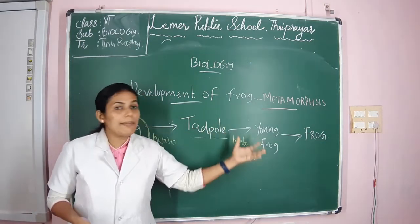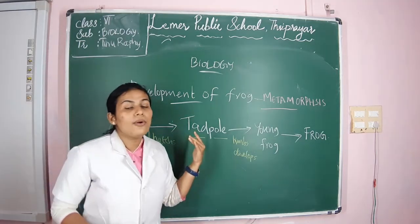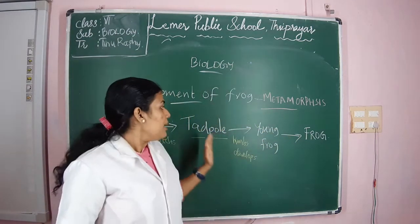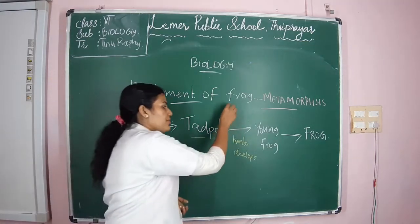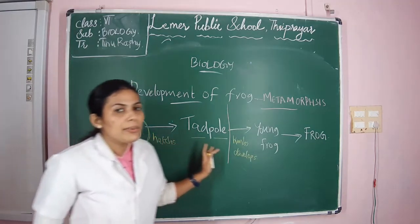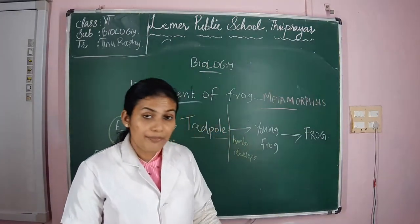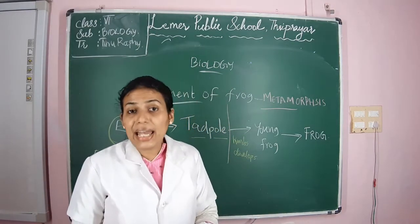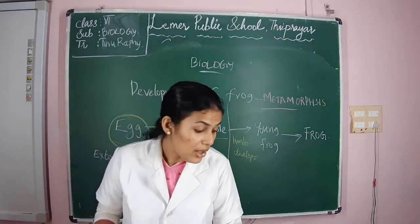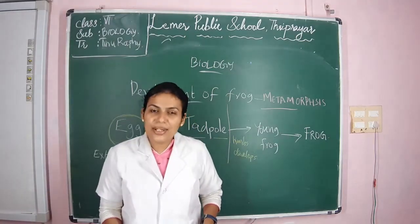In today's class we learned about the metamorphosis shown by frog. That is the egg hatches into the tadpole, the tadpole develops limbs and forms a young frog, and later it develops into an adult frog. Till the tadpole stage, the young frog will be continuing in the water. After that the frog will move to the land. In your textbook, page number 102, there is a diagram given — figure 9.11 — which shows the life cycle of frog. Kindly go through that picture and also go through the textbook. See you in the next class.